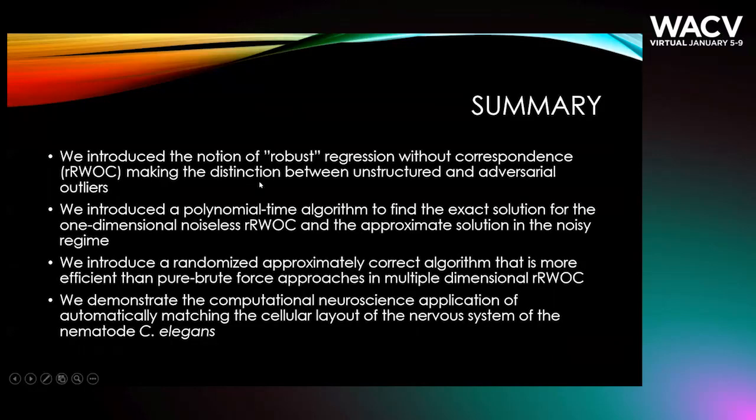In summary, what we did in this paper was to introduce the notion of robust regression without correspondence and made the distinction between unstructured and adversarial outliers. We provided a polynomial time algorithm to solve exactly for the one-dimensional case and a randomized algorithm to find an approximate solution in the high dimensions, which is better than pure brute force. We demonstrated the computational neuroscience application of automatically matching the cellular layout of the nervous system of the nematode C. elegans.